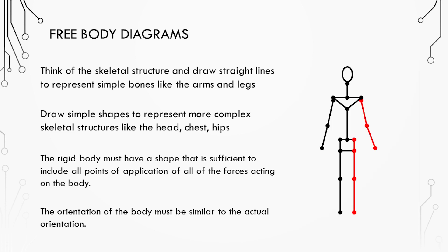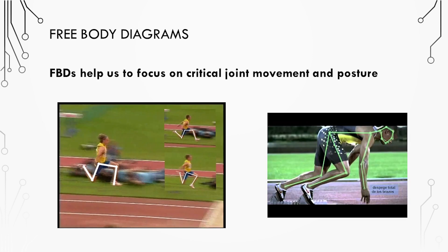The rigid body must have a shape that is sufficient to include all points of application for the forces acting on the body. You may need to have different free body diagrams for different sports. The orientation of the body must be similar to the actual orientation observed in the skill.